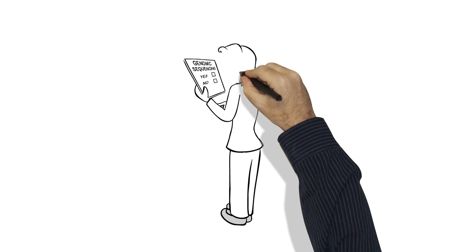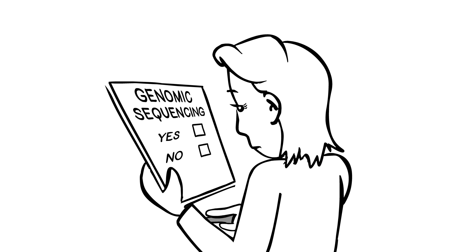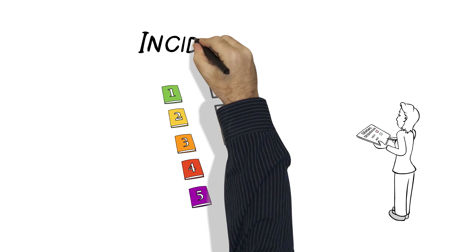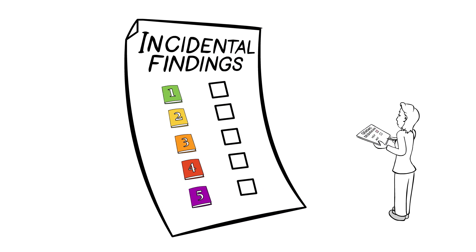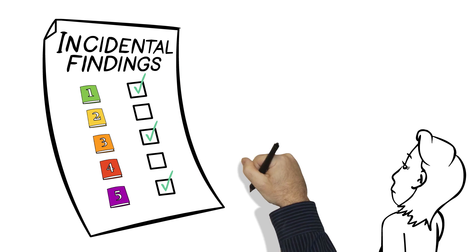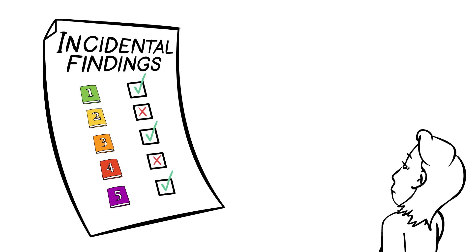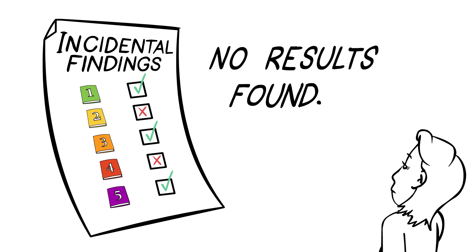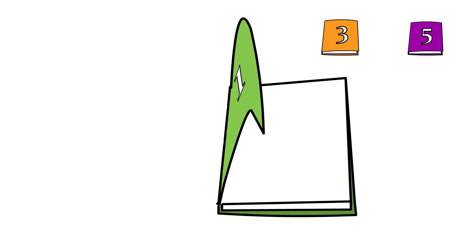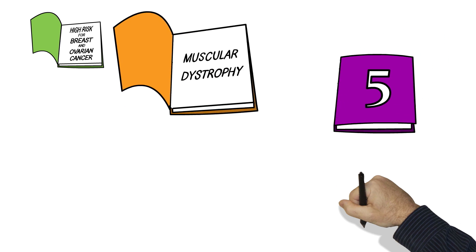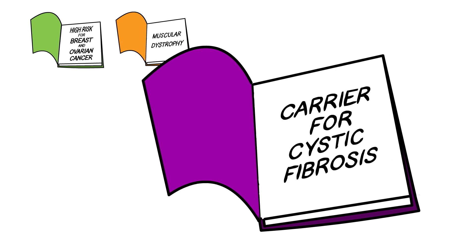So hopefully now you can see this is actually a complex decision, but if you do sign up for genomic sequencing, it's likely you will get to pick which categories of incidental findings you want to look into. So if you say, hmm, I want to look into category 1, 3, and 5, but not 2 and 4, you might learn that sequencing did not find any specific disease genes in those categories, or you might learn that you are at high risk for breast and ovarian cancer and muscular dystrophy, and are a carrier for cystic fibrosis.